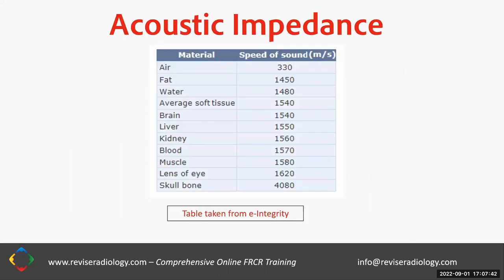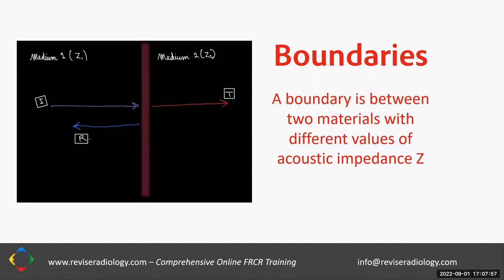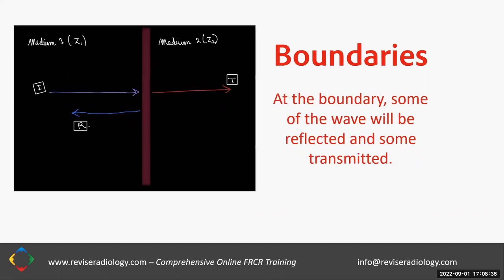Now we understand acoustic impedance, let's fit it into how reflections happen that we measure with the ultrasound transducer. A boundary is between two materials with different values of acoustic impedance Z. Medium one on the left side has acoustic impedance Z1, and medium two on the right side has acoustic impedance Z2. An incident ultrasound wave strikes the boundary, an orange transmitted wave passes through, and a blue reflected wave returns. We'll discuss how these processes actually happen — some of the wave will be reflected and some transmitted.